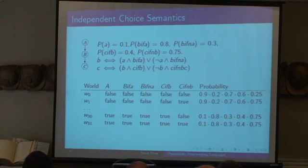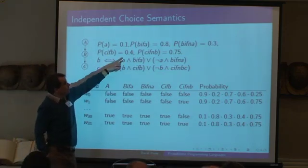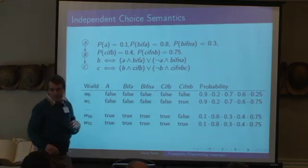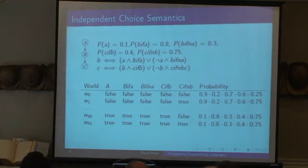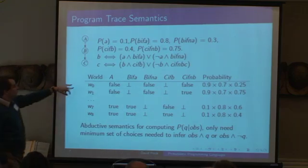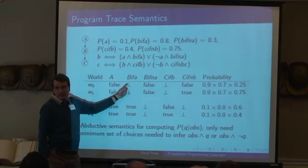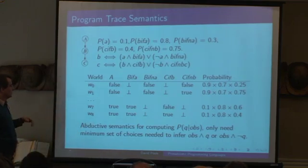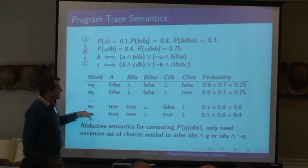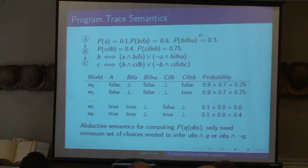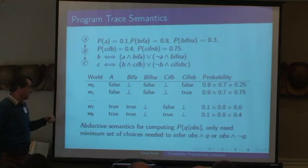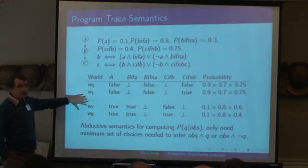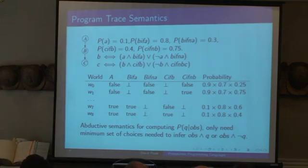Here is the same definition we gave before, with the named choices the Simula program gave, and basically there's a world for each assignment of all of these choices. The program trace semantics says: when A is false, B-if-A doesn't need to be defined, so we have a world W that assigns A as false, B-if-not-A as false, C-if-not-B as false, and so on. So we have all of these worlds — in this example there are only eight worlds, each with a probability. Values not encountered are not in that possible world. In the abductive semantics it's a subset of these — you only need to infer the observation and the query, so there are very few worlds.